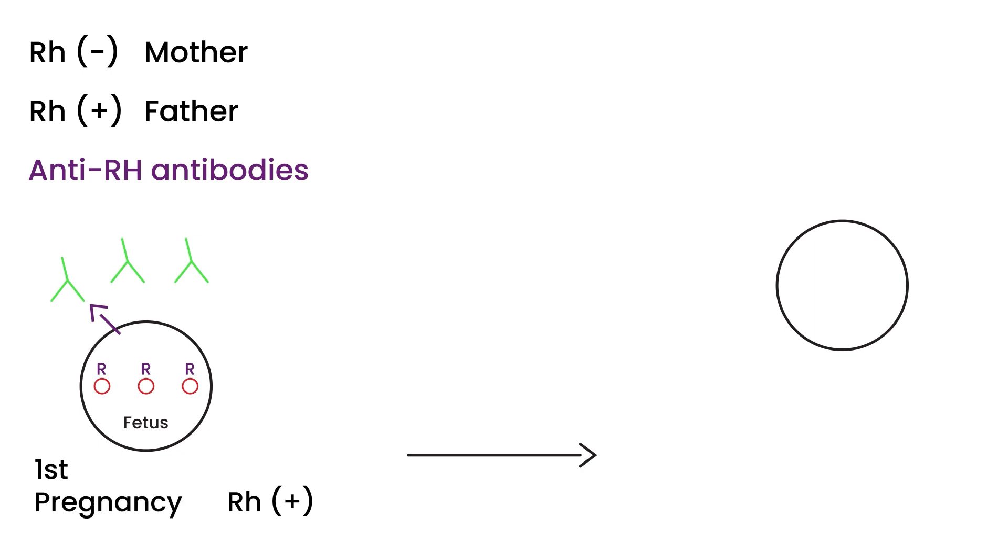The bad news is that during the second pregnancy, this can result in severe anemia or even death of the fetus. Before we start talking about the second pregnancy, there's something that can be done to prevent the second pregnancy from having problems, and that is giving something called RhoGAM. RhoGAM essentially is an anti-Rh antibody injection.